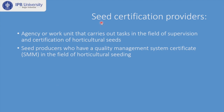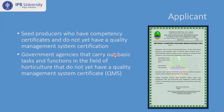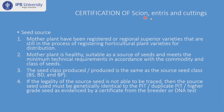Seed certification providers are agencies or work units carrying out tasks in the field of supervision and certification of horticulture seeds. The producer itself can also be a provider, but it should have a quality management system certificate. They should register first and undergo assessment to determine if the seed producer can run the certification system independently. Applicants must have a certificate of competency for producing horticulture seed.